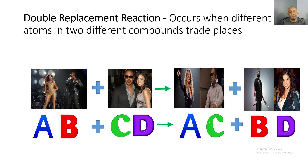Double replacement reaction occurs when different atoms in two different compounds trade places. For example, Beyoncé and Jay-Z are together, and Marquez Houston and Jennifer Freeman are together. After the chemical reaction, Beyoncé is with Marquez Houston and Jay-Z is with Jennifer Freeman. So we had AB plus CD, and on the product side A got with C and B got with D — two things were replaced.